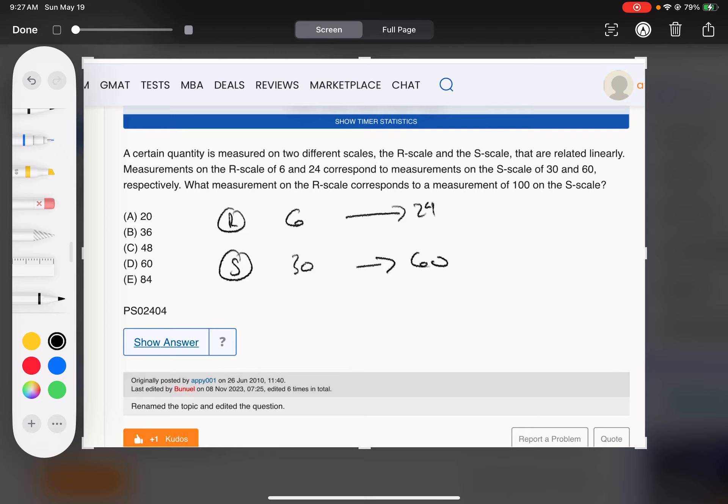The R scale itself doesn't start increasing faster. So if this is a jump of 18, that corresponds to a jump of 30.